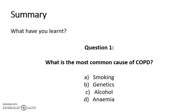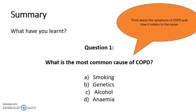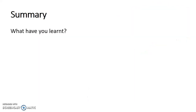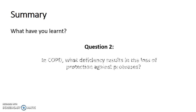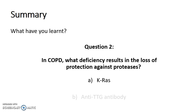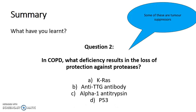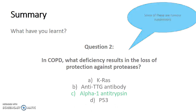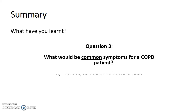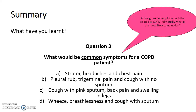To summarise the MCQ answers: the most common cause of COPD is smoking; the deficiency resulting in loss of protection against proteases is alpha-1 antitrypsin; and the common symptoms are wheeze, breathlessness, and cough with sputum. Thank you for listening and I hope you found that useful.